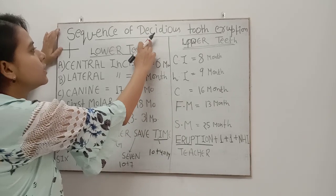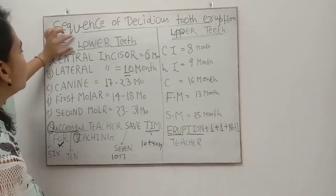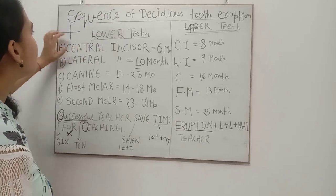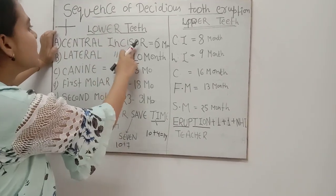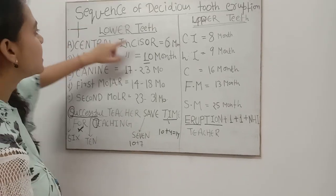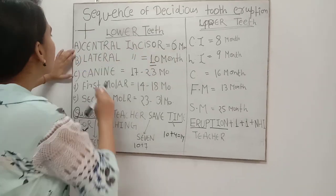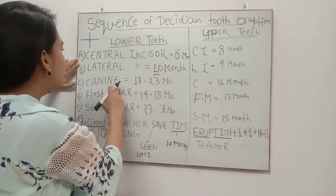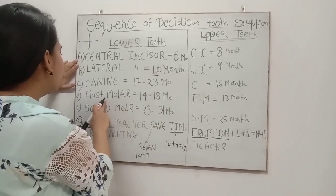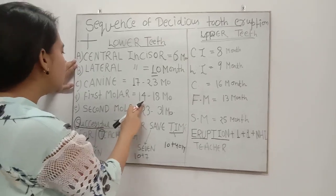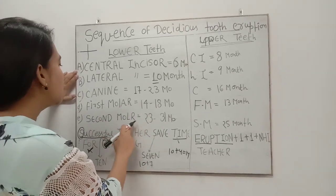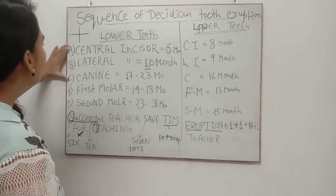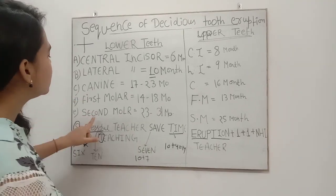For the sequence of deciduous tooth eruption, lower teeth appear first. The lower central incisor erupts at 6 months of age. Lateral incisor erupts at 10 months. Canine erupts at 17 to 23 months. First molar erupts at 14 months. Second molar erupts at 23 months. You can remember these five using a very simple trick.